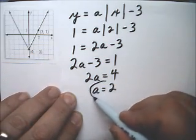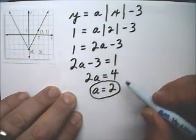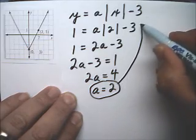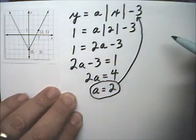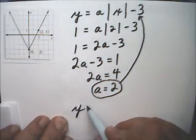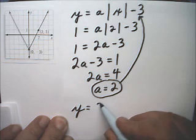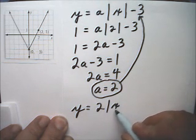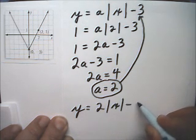So now I have to substitute a equals 2 into this, and that'll be the answer. That'll be the equation. So it is y equals 2 times the Absolute Value of x minus 3.